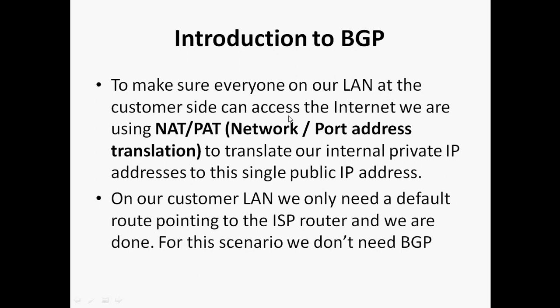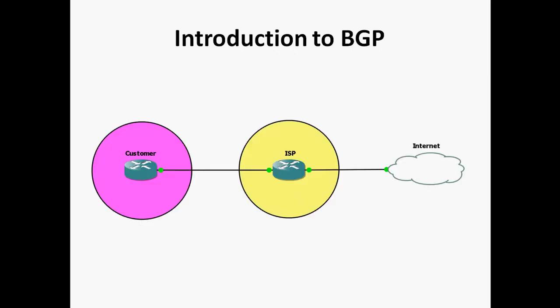If a customer is connected to the ISP, all systems in the customer LAN should be able to access the internet through NAT and PAT, because the ISP provides only a single public IP. In a home-based router — for example D-Link or Cisco — NAT is enabled on the WAN port by default, so you don't need to configure it. On our customer LAN, we only need a default route pointing to the ISP router. For this scenario, we don't need BGP.